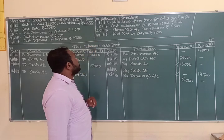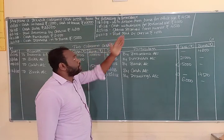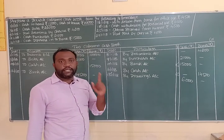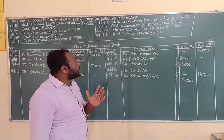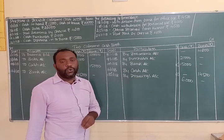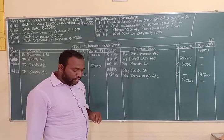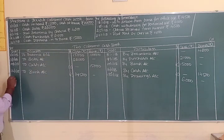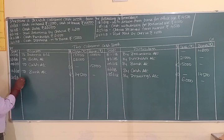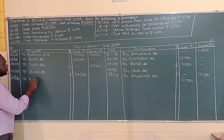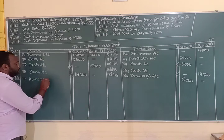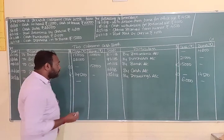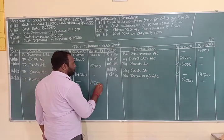On 25th January 2018, cheque received from Kumar rupees 4,500. A cheque means bank. The journal entry is bank account debit to Kumar's account. We record 'To Kumar's Account' on the debit side in the bank column, entering rupees 4,500.